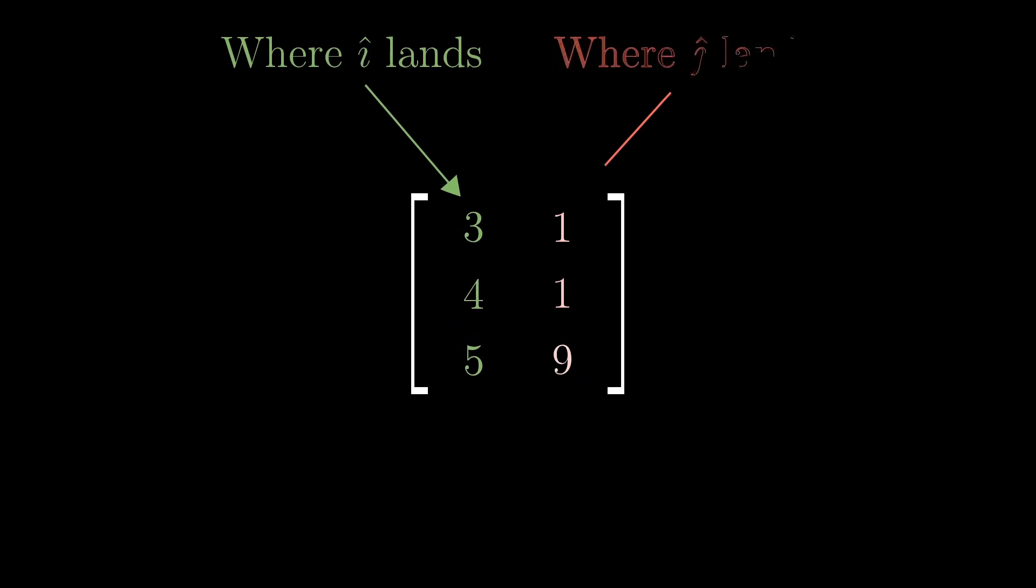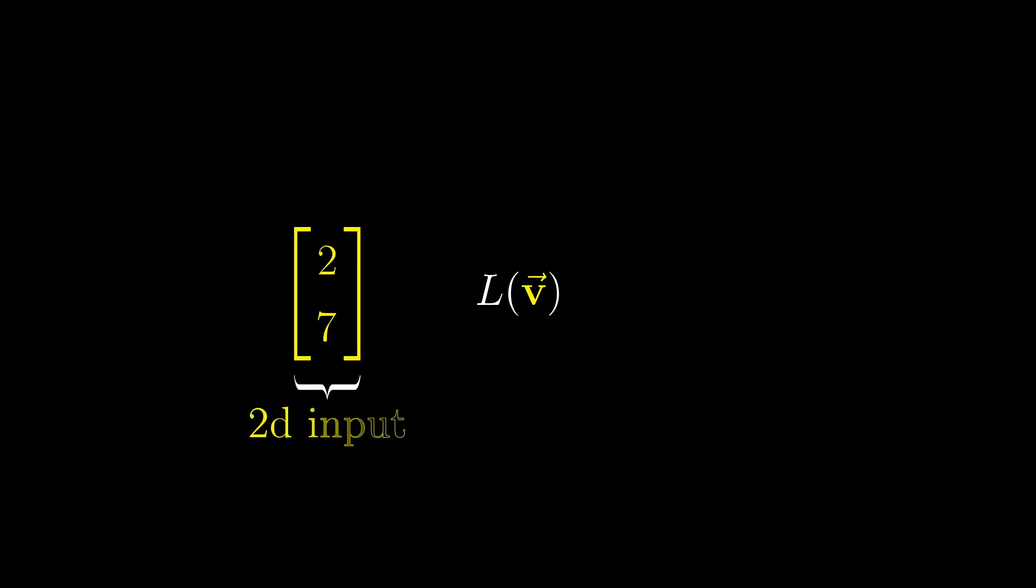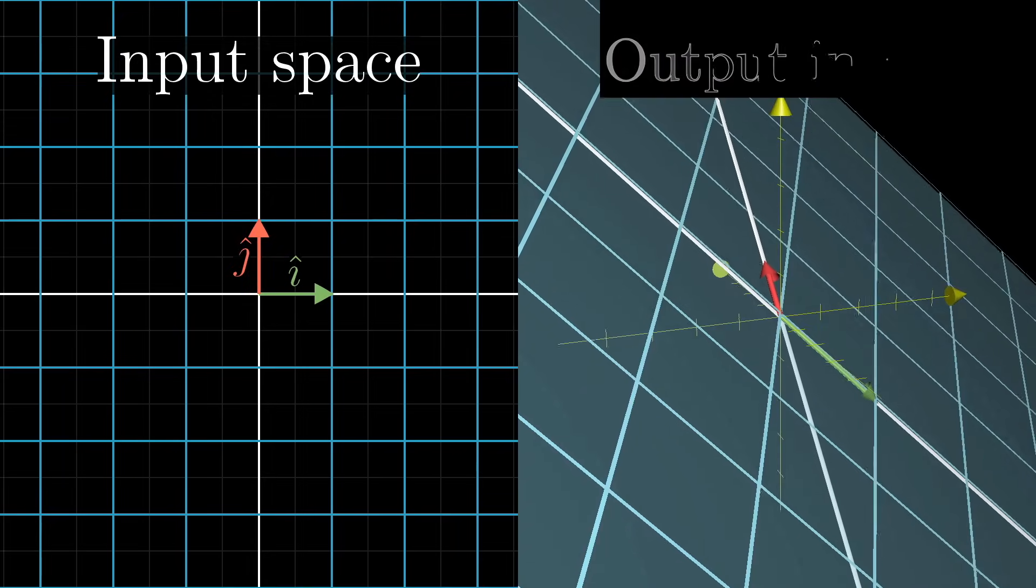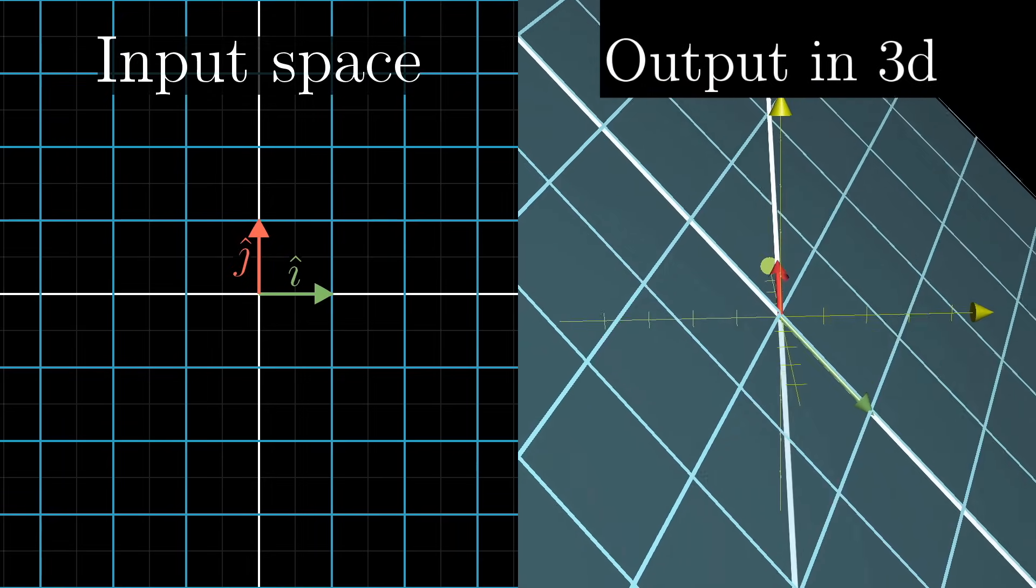By now in the series, you actually have most of the background you need to start pondering a question like this on your own, but I'll start talking through it just to give a little mental momentum. It's perfectly reasonable to talk about transformations between dimensions, such as one that takes 2D vectors to 3D vectors. Again, what makes one of these linear is that grid lines remain parallel and evenly spaced, and that the origin maps to the origin.